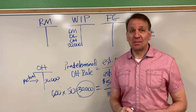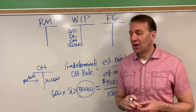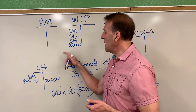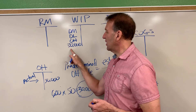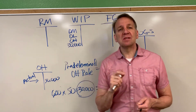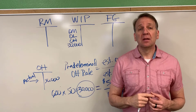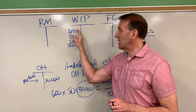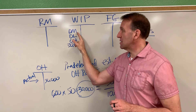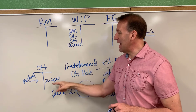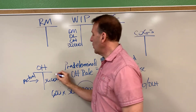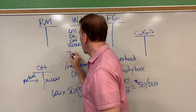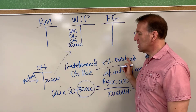You might need to look at this a few times and really think about what we're doing. What we're trying to do is take costs out of overhead and move them into work in process. This is an inventory account, so we're increasing the asset. As we're working on our product, we're adding direct materials, direct labor, and now this is how we add the overhead costs — through this predetermined overhead rate, in our example 600 direct labor hours times the rate.